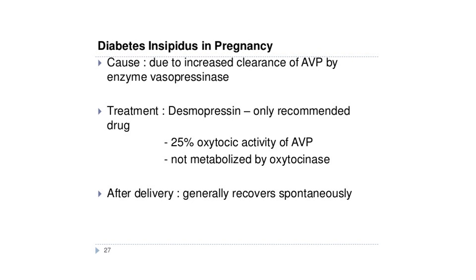During pregnancy, there is increased metabolism of vasopressin due to cysteine aminopeptidase, also known as oxytocinase or vasopressinase — an enzyme that normally degrades oxytocin and prevents premature uterine contraction. The only recommended treatment for diabetes insipidus in pregnancy is desmopressin, which has 25 percent of the oxytocin activity of AVP and is not metabolized by oxytocinase. After delivery, diabetes insipidus generally recurs spontaneously.